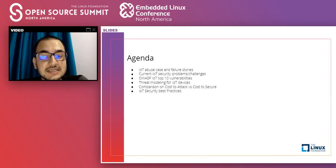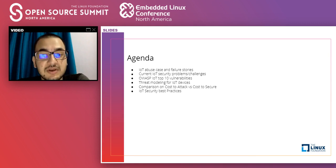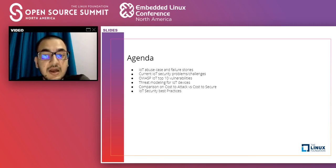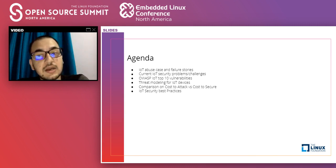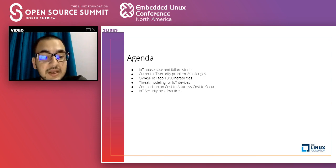Today's agenda: we'll begin with an introduction to IoT abuse cases and failure stories, followed by current security challenges in IoT. After that we'll talk about threat modeling — very important for developers. We'll also spend a lot of time on the OWASP Top 10 vulnerabilities, a nonprofit organization that releases the top 10 vulnerabilities observed over the last few years. Finally we'll cover best practices in security.